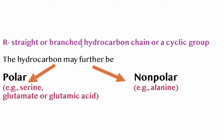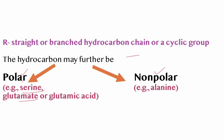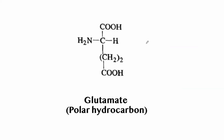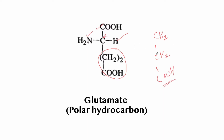The R group can be a straight or branched hydrocarbon chain or a cyclic group. Hydrocarbons may be further divided into polar and non-polar. Examples of polar R groups include serine and glutamate (glutamic acid); an example of non-polar is alanine. Glutamic acid has an extra hydroxyl group which makes it acidic.